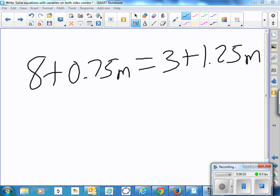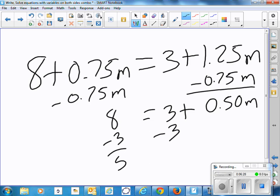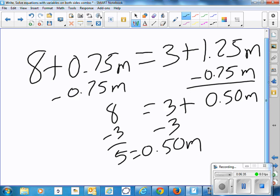So we have $8 plus $0.75 per mile being equal to $3 plus $1.25 per mile. Let's subtract the $0.75 per mile since that's smaller than $1.25 per mile. Well, the difference between those two is $0.50 per mile. So then I have $3 and I have the $8. Let's get the $0.50 per mile all by itself.